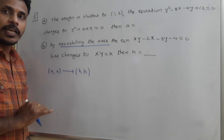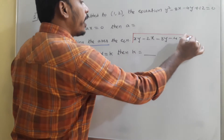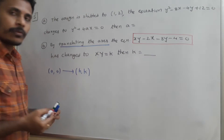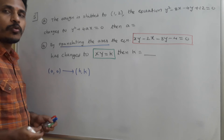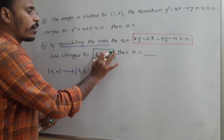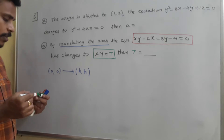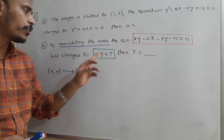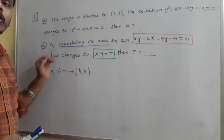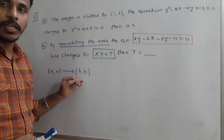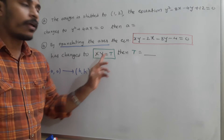We shifted the origin to a point h, k. Now the question is: given that the equation xy minus 2x minus 3y minus 4 equals 0 has changed to xy equals k by translating the axis. Since we already used the new origin as h, k, just for convenience rewrite that k as t. We need to find t. This is the old equation and this is the new equation obtained by translating the axis — so by shifting the origin, the old equation becomes the new equation.